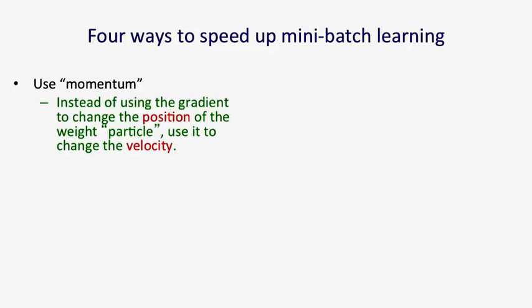I'm now going to talk about a method called momentum. In this method, we don't use the gradient to change the position of the weights. That is, if you think of the weights as a ball on the error surface, standard gradient descent uses the gradient to change the position of that ball. You simply multiply the gradient by a learning rate and change the position of the ball by that vector. In the momentum method, we use the gradient to accelerate this ball. That is, the gradient changes its velocity. And then the velocity is what changes the position of the ball. The reason that's different is because the ball can have momentum. That is, it remembers previous gradients in its velocity.